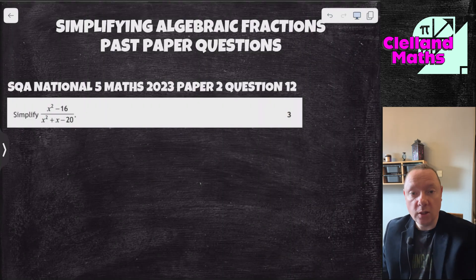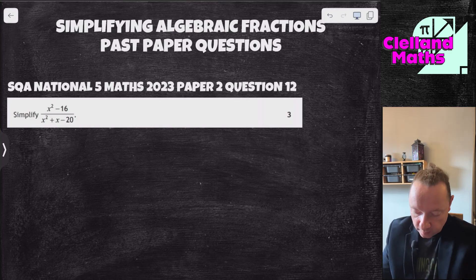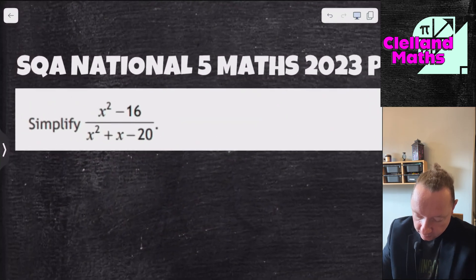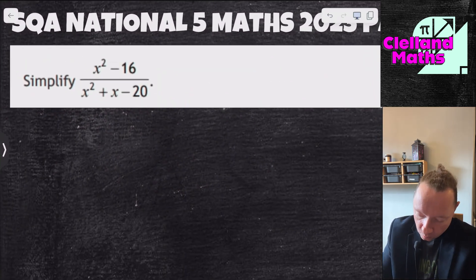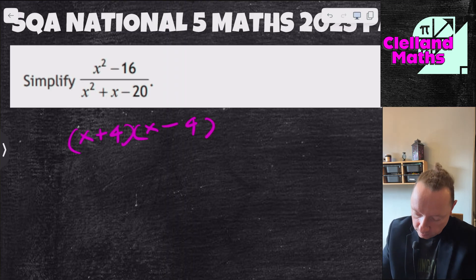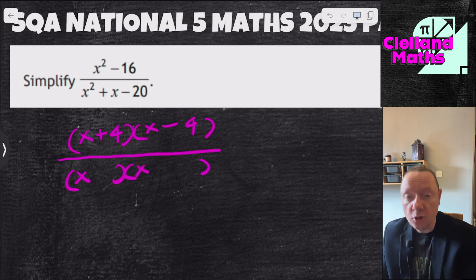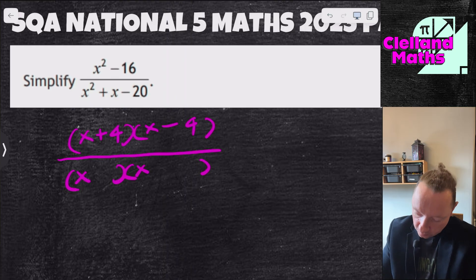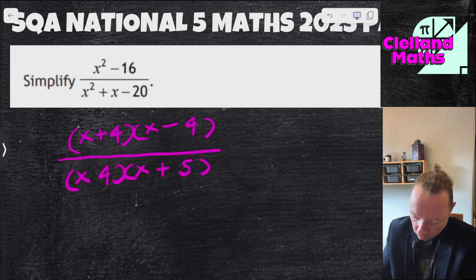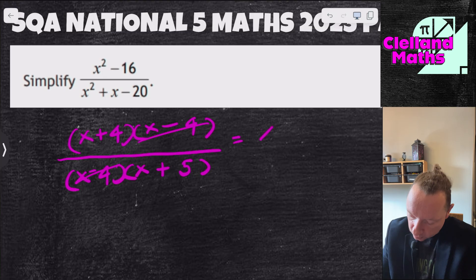National 5 Maths 2023 paper 2 question 12: simplify x² minus 16 over x² plus x minus 20. The top is a difference of two squares: (x+4)(x-4). The bottom: two numbers multiply to 20 and add to 1 — that's 5 and minus 4, so (x+5)(x-4). Cancel (x-4), leaving x plus 4 over x plus 5.